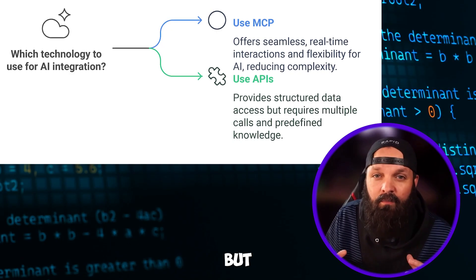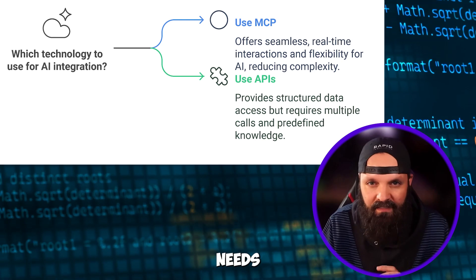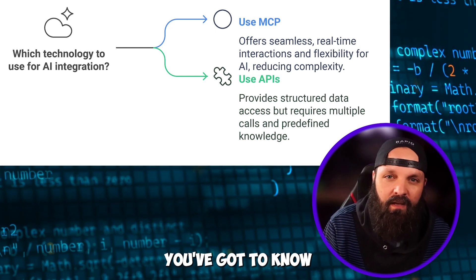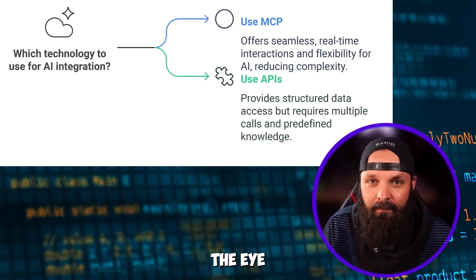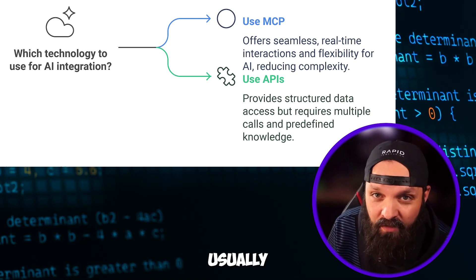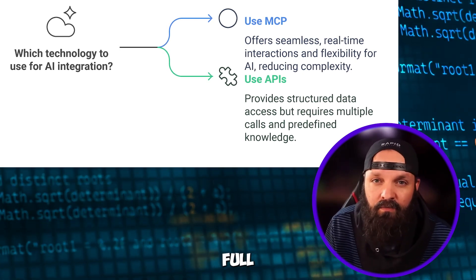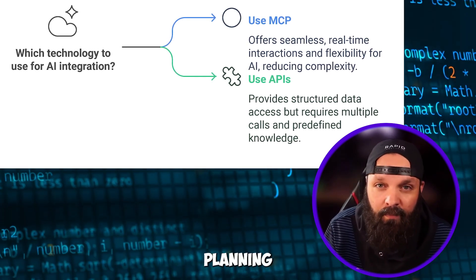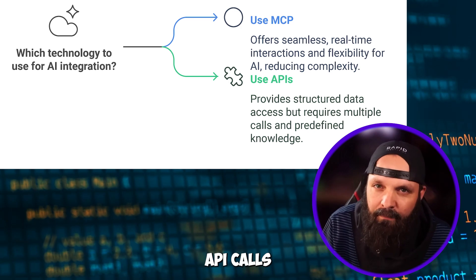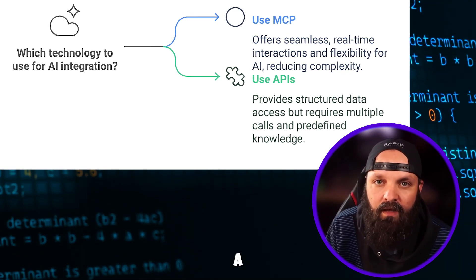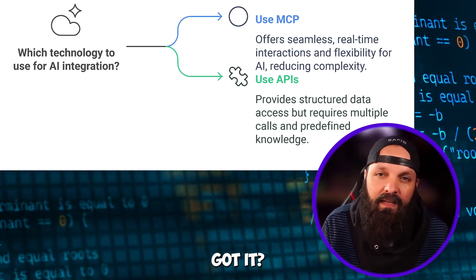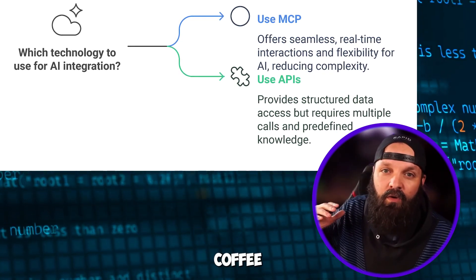You might be thinking, don't APIs already do this? APIs are awesome, but they've got limits. With APIs, every new service needs its own special handshake — tedious, right? MCP says one handshake fits all. APIs are static: you've got to know the menu before you order. MCP lets the AI peek at the menu on the fly. And while APIs are usually a quick data exchange, MCP hangs out for the full conversation — it's built for AI, not just data, and that's where it shines. Picture planning a trip: old way, separate API calls for flights, calendars, and emails. With MCP it's one seamless flow — the AI handles everything and you're just sipping your coffee stress-free.